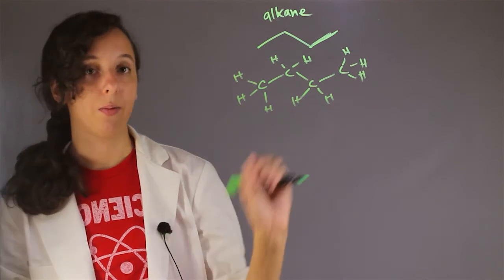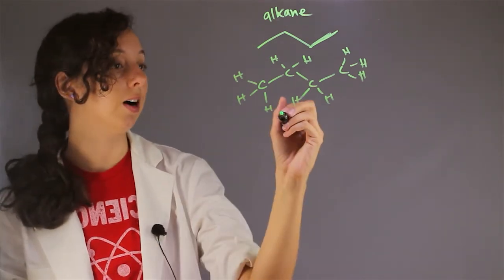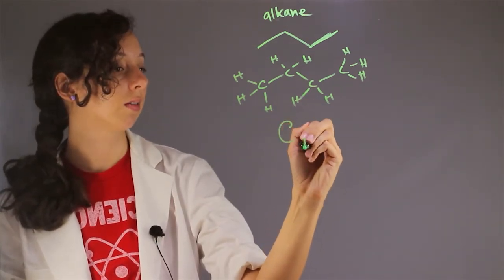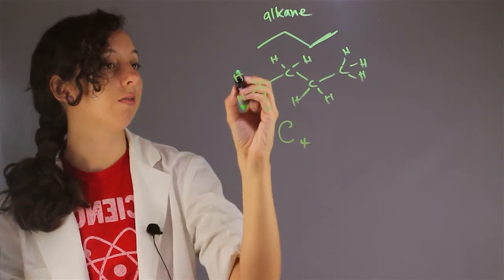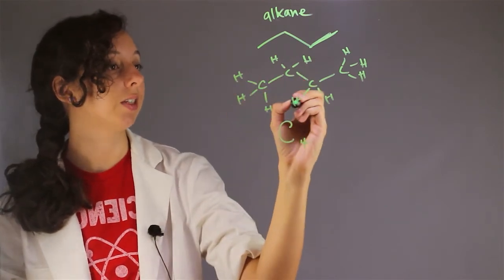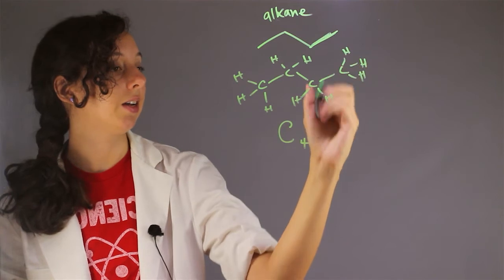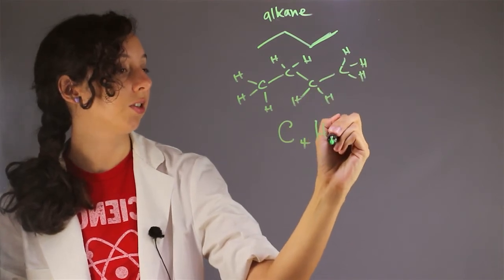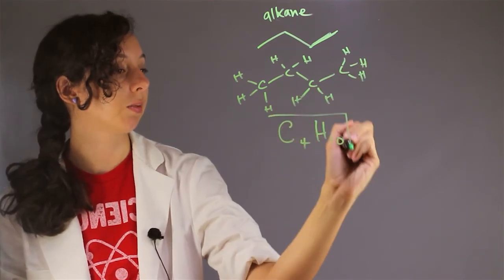So let's count up how many carbons and hydrogens we have. Well, we have four carbons. We have one, two, three, four, five, six, seven, eight, nine, ten hydrogens. So this is our chemical formula.